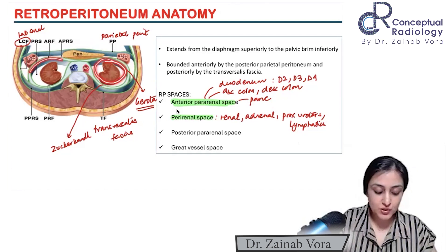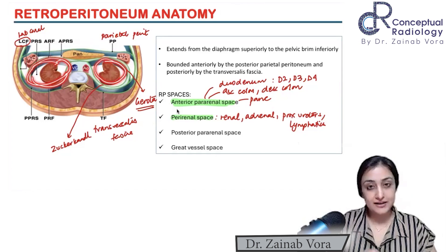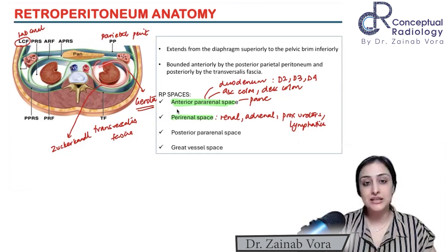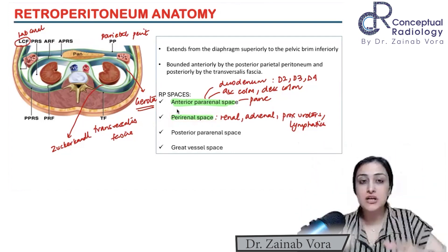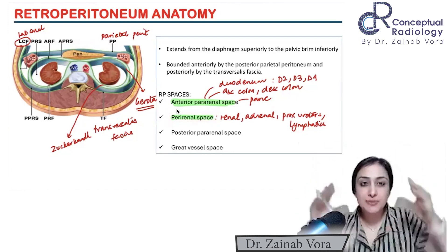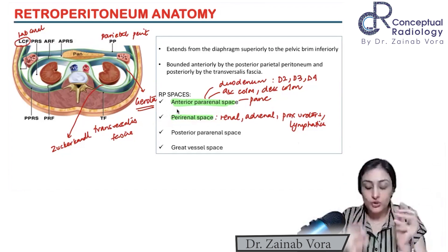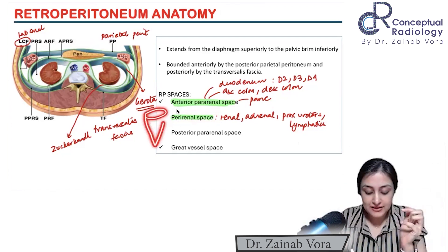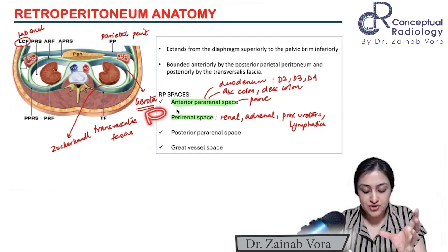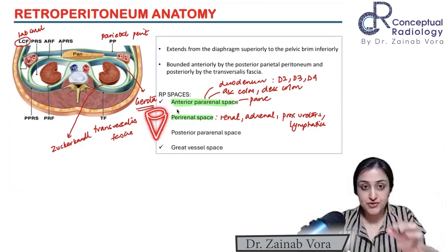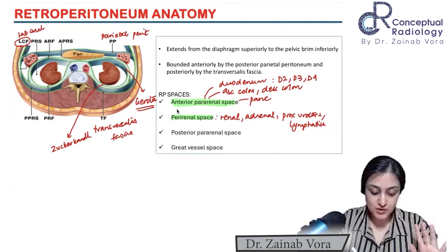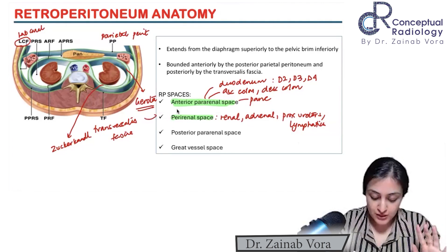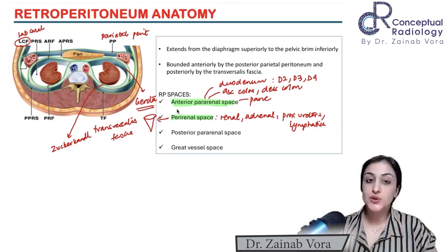It's important to understand that the perirenal space does not continue straight down into the pelvis — it is shaped like a cone. So inferiorly it just tapers and does not continue down into the pelvis. Gerota's and Zuckerkandl's fasciae together make up the perirenal space.